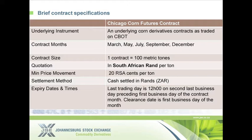We selected the same expiry months that Chicago has: namely March, May, July, September, and December. They trade in bushels, but we wanted to give it a South African feel and make it easier to compare with the local grain market, so we trade a 100 metric ton contract — no headache for South Africans, everything stays in tons. Importantly, all these foreign reference commodities are quoted and traded in RAND, so we bring it back to the local currency.